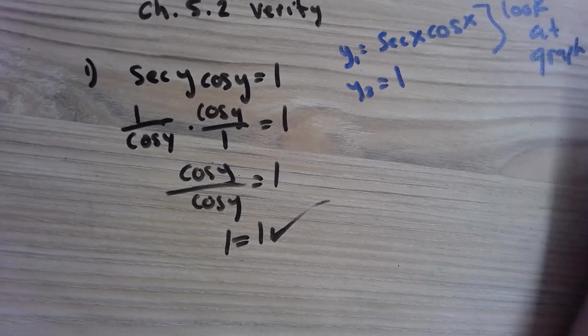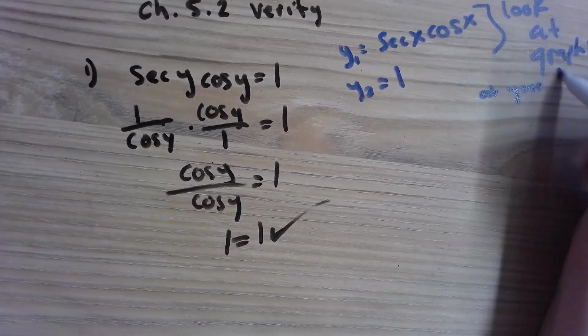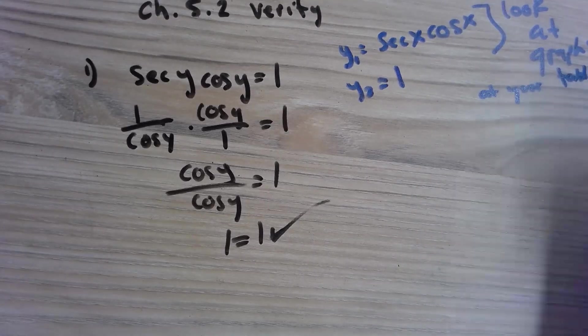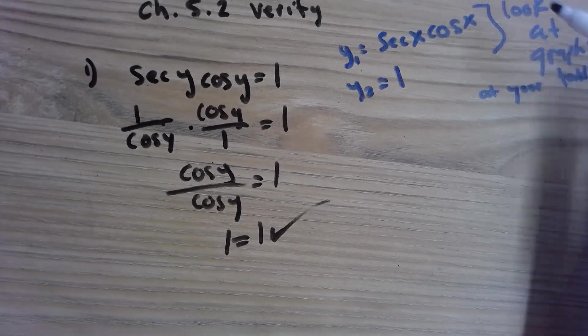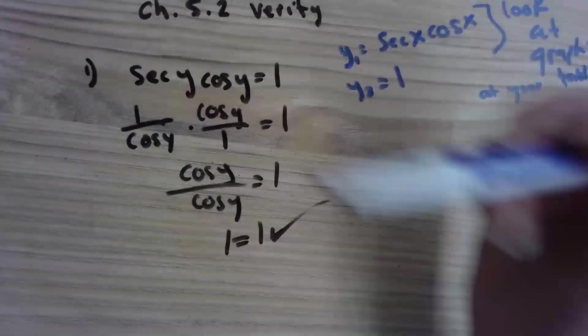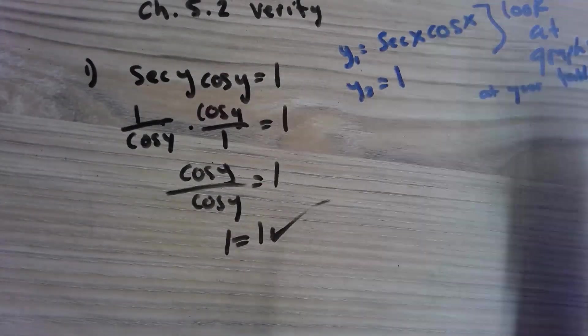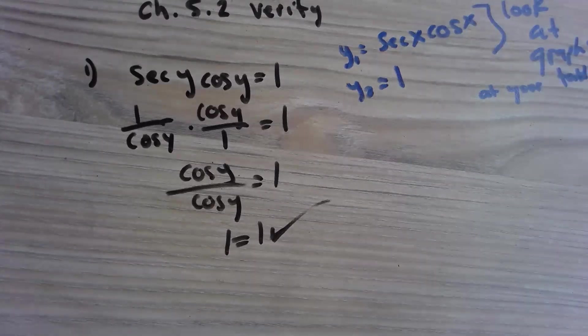You can look at the graphs and they would be the same, or you can look at your table and your outputs would all be the same. If it asks you to do that, you could check it. Sometimes it's just nice to check it if you're going through it a lot of times and it's just not working and you're going like does it even exist, you can always verify it.